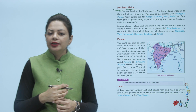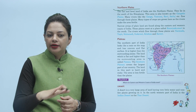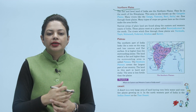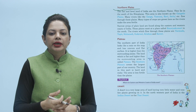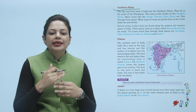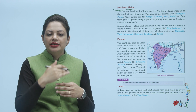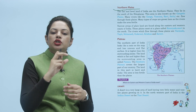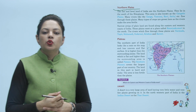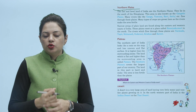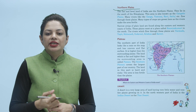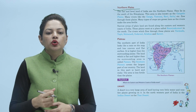The flat and level land of India are the Northern Plains. They lie to the south of the Himalayas, just below the Himalayan ranges. This area is also known as the Gangetic Plains. Many rivers like the Ganga, Yamuna, Ravi, Satluj, etc., flow through these plains.